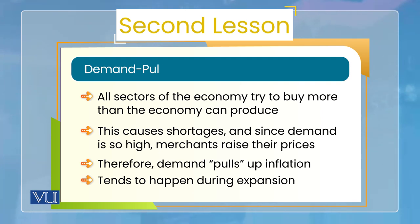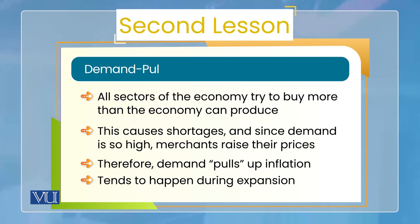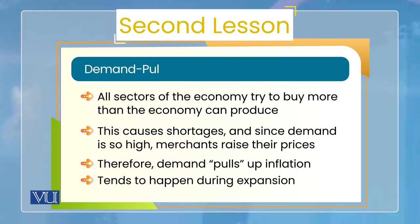ایسا عموماً کب ہوتا ہے؟ جب economy کے حالات اچھے ہوں. جب economy کے حالات برے ہوں، crisis کی situation ہو، government debt کا problem face کر رہی ہو، private sector میں employment کی opportunities نہ ہوں — تو ایسی صورتحال میں demand-pull inflation نہیں ہو سکتا. Demand-pull inflation تب ہوتا ہے جب لوگوں کے حالات اچھے ہوں، income زیادہ ہو، government کے پاس بھی زیادہ resources ہوں جس کی وجہ سے وہ زیادہ spending کر رہی ہو.